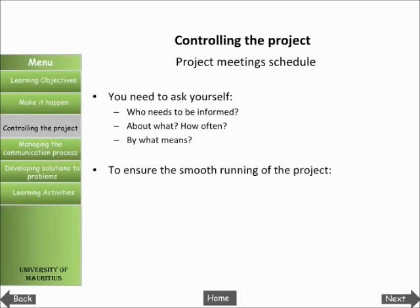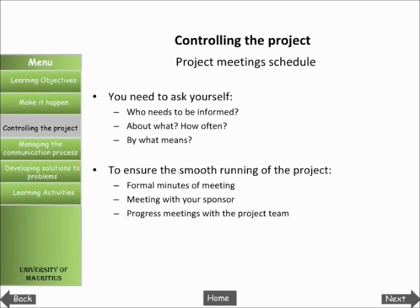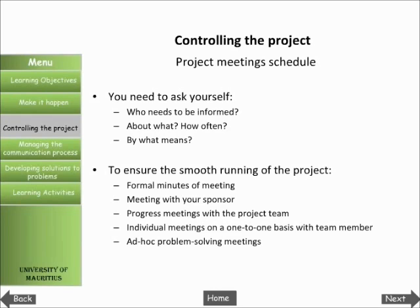To ensure the smooth running of your project, you might need any or all of the following: formal minutes meetings, which probably run to a schedule outside your control; meetings with your sponsor, which might be on a one-to-one basis; progress meetings with the project team; individual meetings on a one-to-one basis with team members; and ad hoc problem-solving meetings when particular issues need to be resolved.